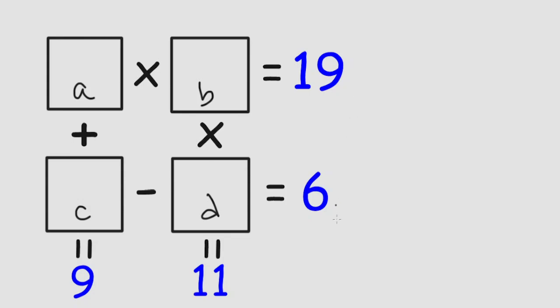And then we'll set up some equations to solve for the values. So we have A times B is equal to 19, and B times D is equal to 11.